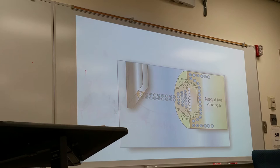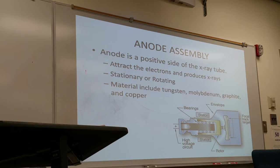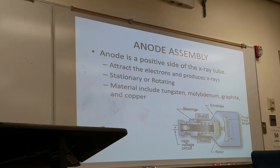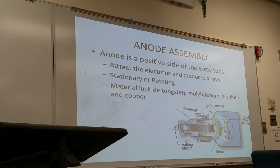The anode side is the positive side of the x-ray tube. It is mainly made up of a large tungsten disk, and this is where x-ray photons are produced — the source of x-rays. The anode attracts the incoming electrons from the cathode, and after their interaction with the tungsten disk, x-ray photons are produced.